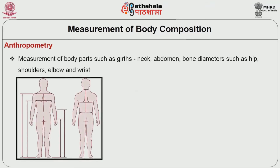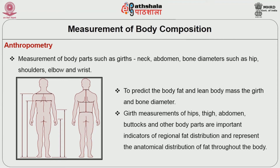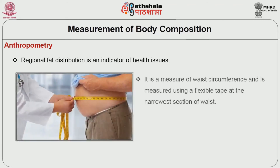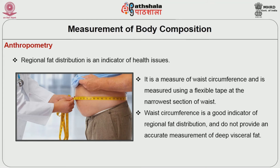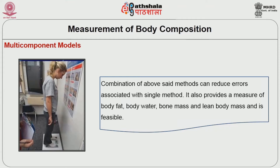Anthropometry involves the measurement of body parts such as girths of neck and abdomen, and bone diameter such as hip, shoulders, elbow and wrist. Girth and bone diameter are used to predict body fat and lean body mass. Girth measurements of hips, thigh, abdomen, buttocks and other body parts are important indicators of regional fat distribution and represent the anatomical distribution of fat throughout the body. Regional fat distribution is measured using waist circumference with a flexible tape at the narrowest section of the waist. Waist circumference is a good indicator of regional fat distribution but does not provide an accurate measurement of deep visceral fat.